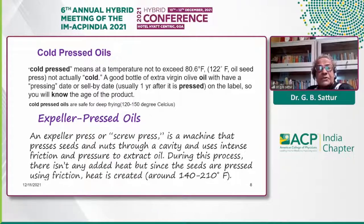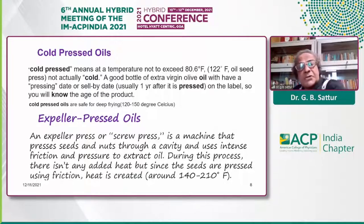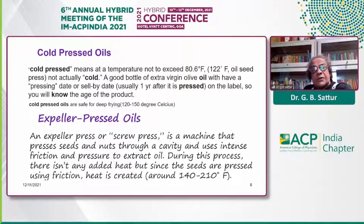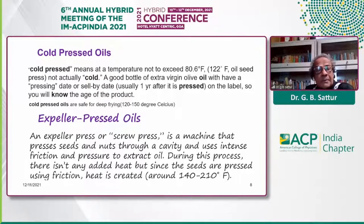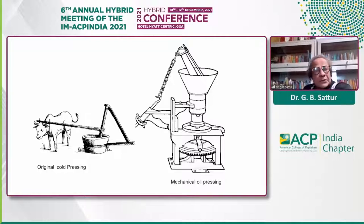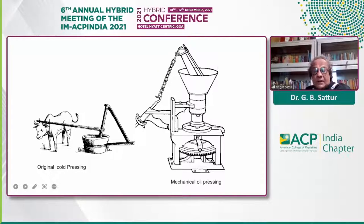Cold pressed oil means extraction at a temperature not exceeding 80 degrees Celsius. It is not actually cold — there is some friction between the seeds that generates heat. One of the best examples is extra virgin olive oil, which has a pressing date and an expiry date. After cold pressed oil, there is expeller pressed oil, which is similar but uses a machine with intense friction and pressure to extract oil from seeds, generating heat around 210 degrees Fahrenheit. Those from villages may know the original cold pressing, which is still done mechanically in some parts of India.